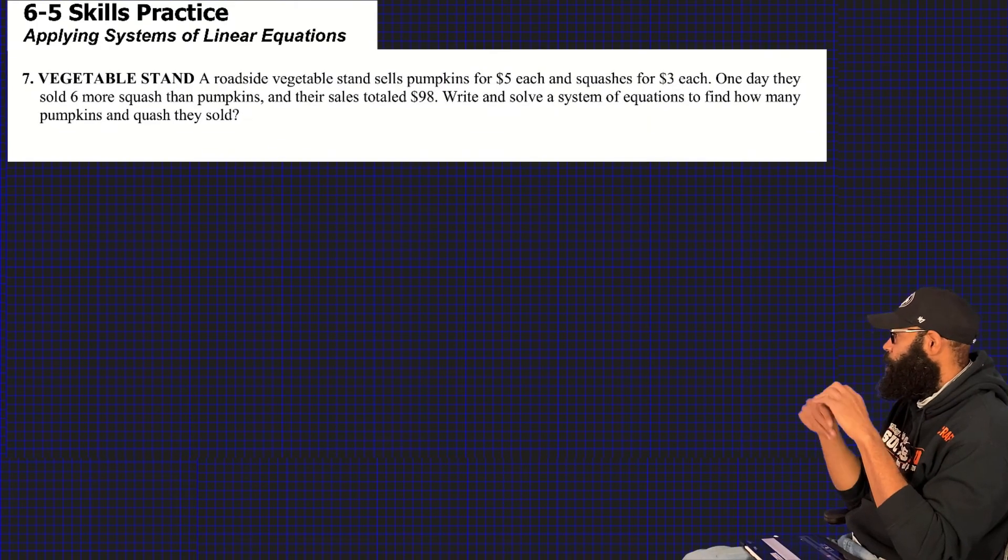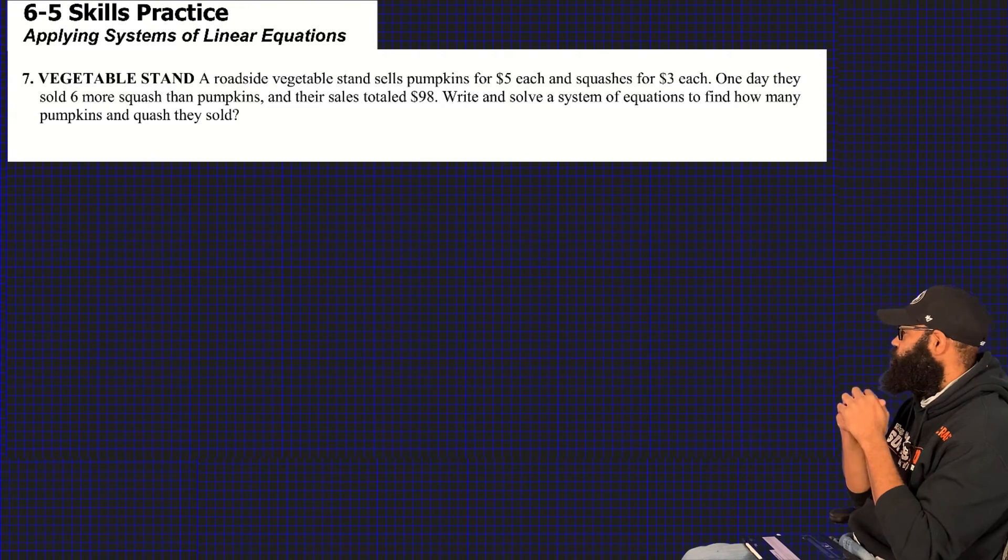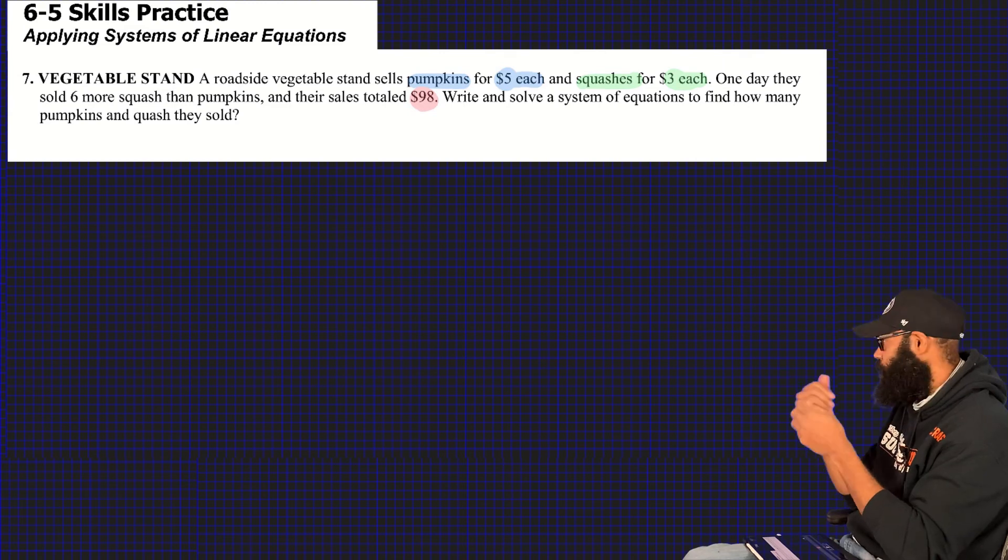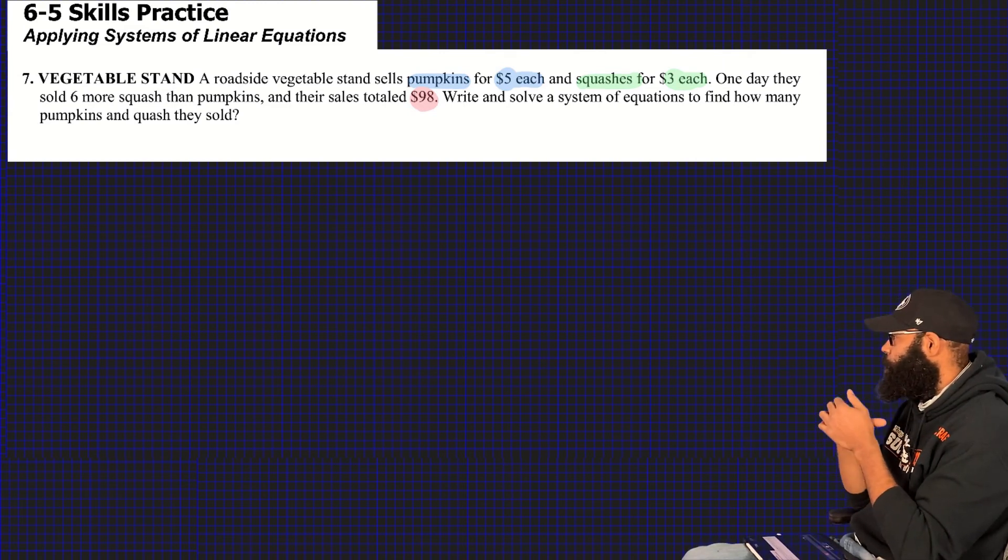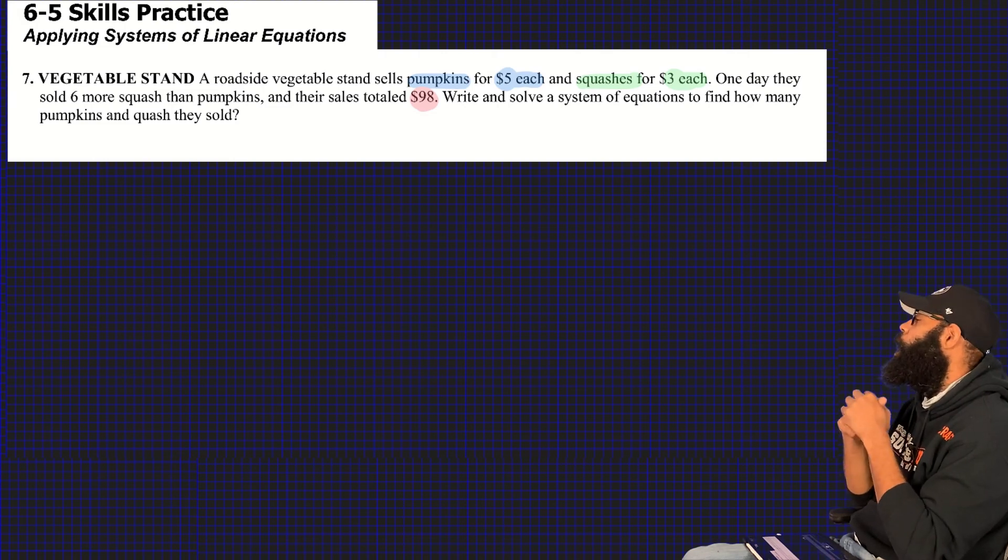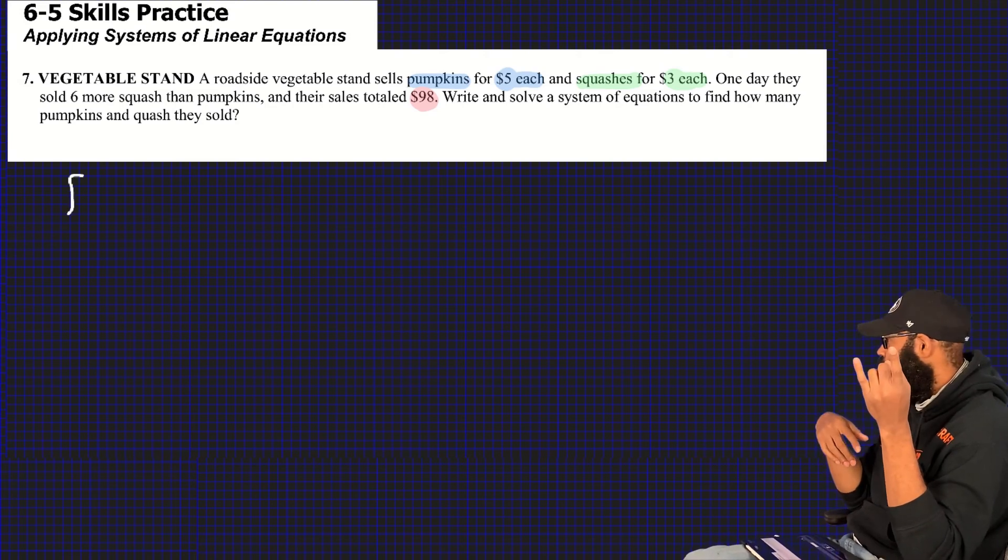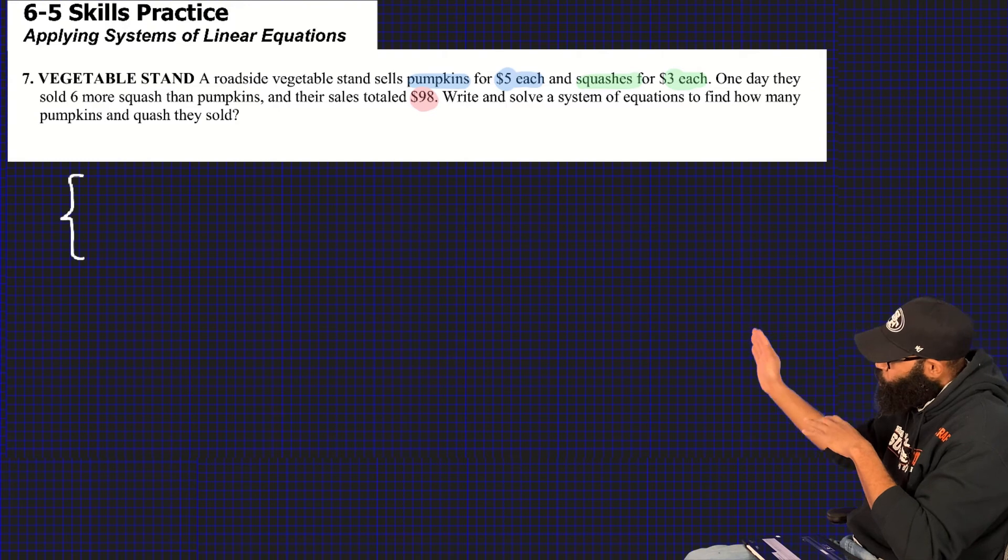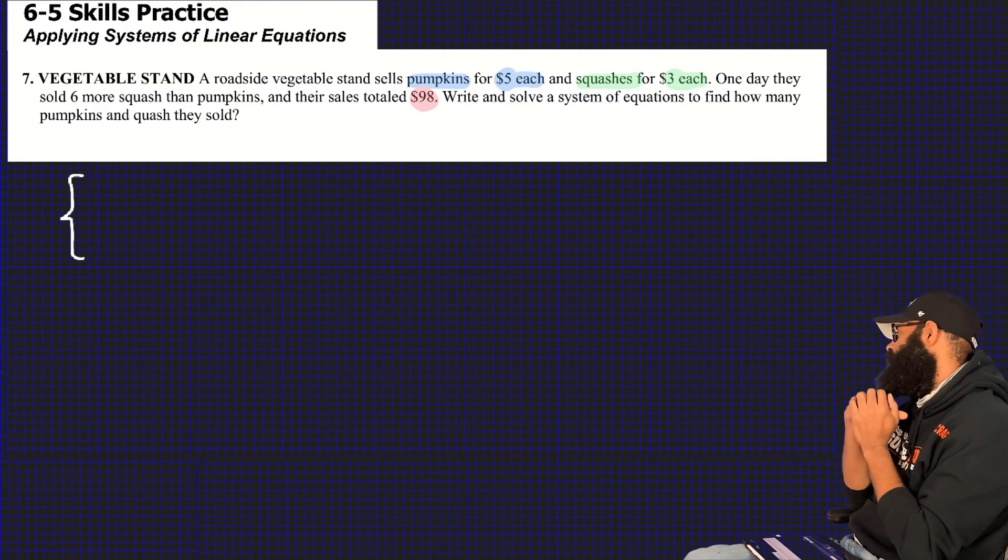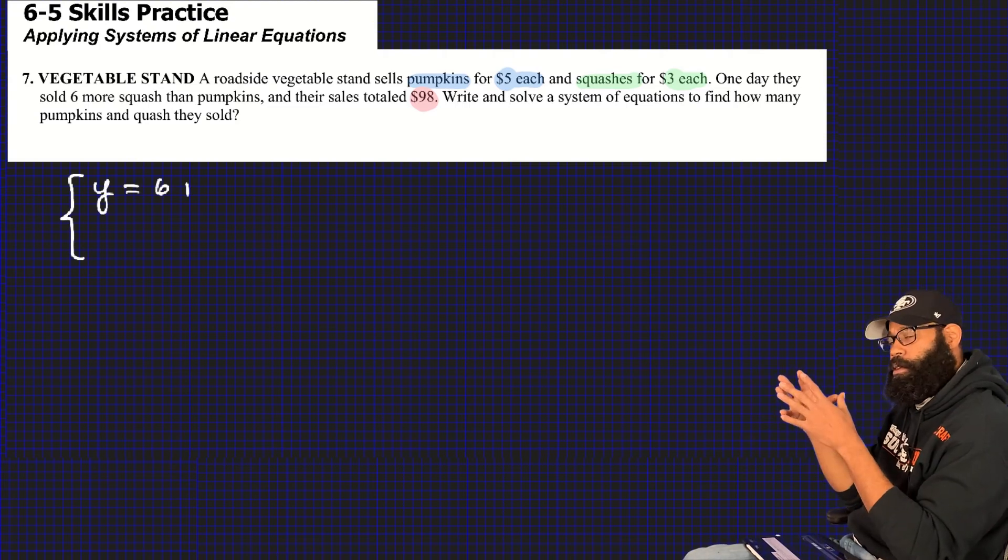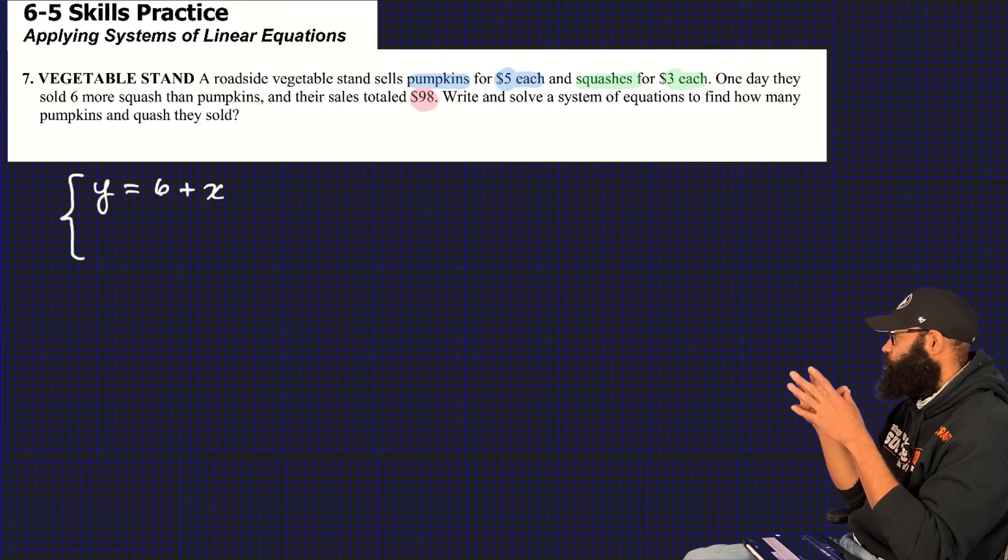Ooh, love it. What's the problem? A vegetable stand. A roadside vegetable stand sells pumpkins for $5 each and squashes for $3 each. Let's highlight our important information. One day they sold six more squashes than pumpkins. That sounds like an equation. And their sales totaled $98. Okay, as soon as I see the word total, my brain's thinking equals. So equals $98. Write and solve a system equation to find how many pumpkins and squashes they sold. Alright guys, so in my brain I'm thinking I need two equations because it literally said to write and solve a system equation.